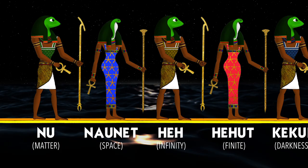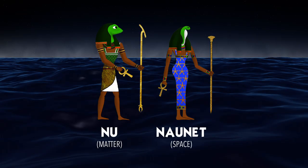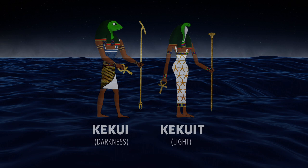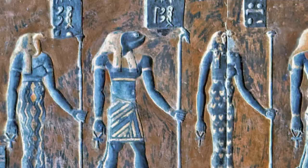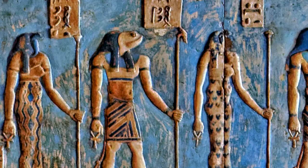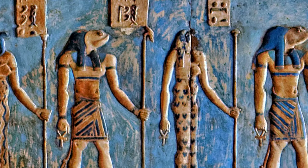The Nun, Nunet, the Ha, the Hahet, the Kak, Kaket, and the Amen and Amunet. In other words, they talked about the Nun being matter, the Nunet being space, the Ha being infinity and the Hahet being finity. The Kak is darkness, Kaket is the light, the Amen is the hidden and the Amunet is the revealed — the male and the female entities.